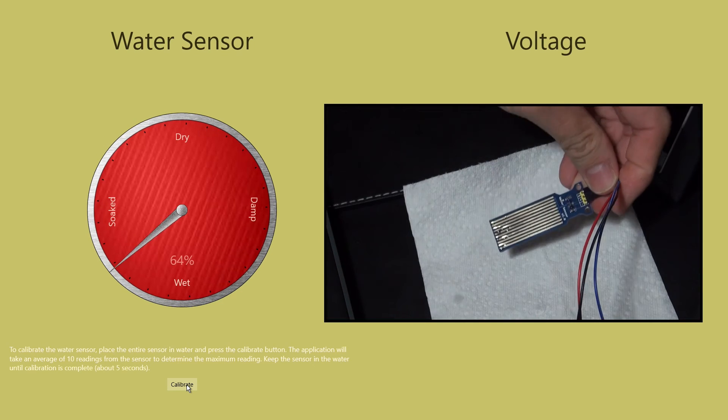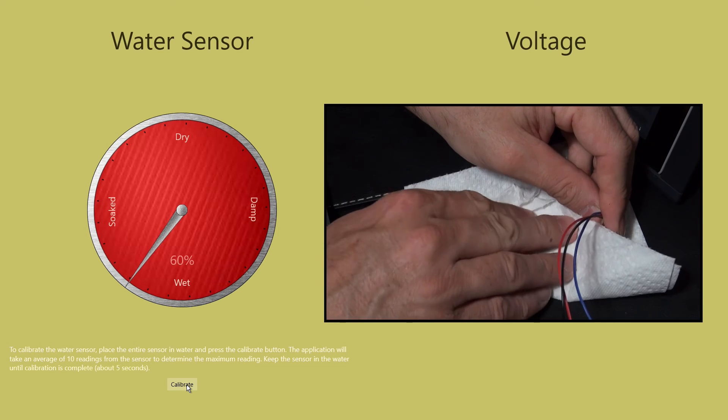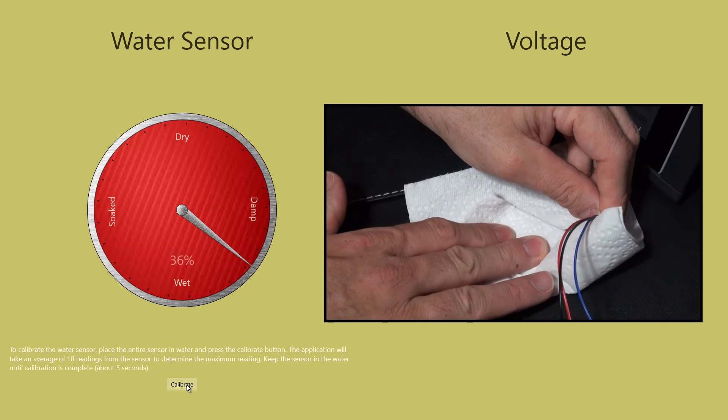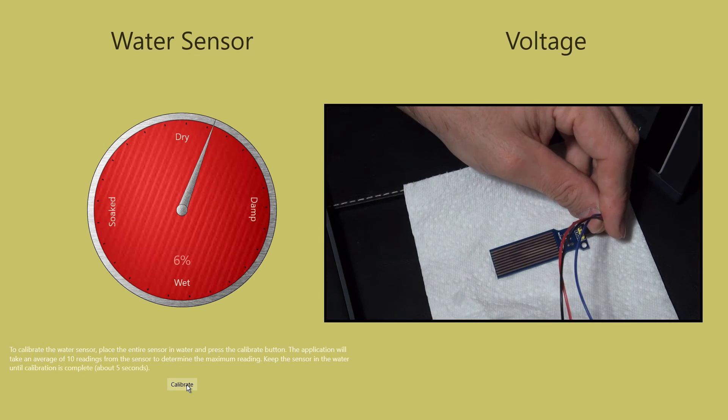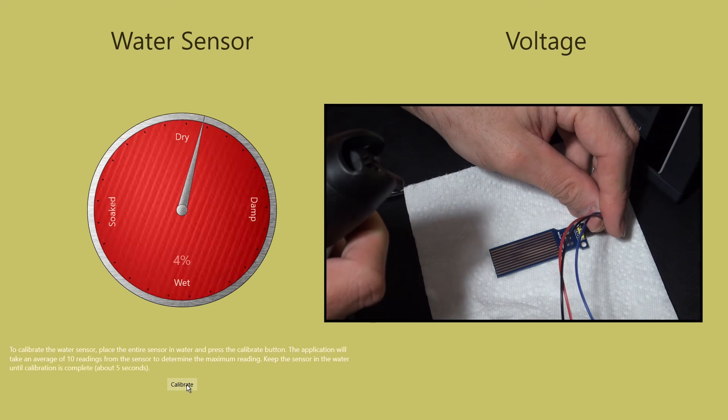I'll remove the sensor and begin to dry it so we can watch the reading drop. You can see that this device is very sensitive to small amounts of water. I'll use a can of air to remove the remaining amount of water to completely dry the sensor.